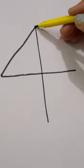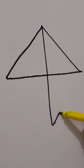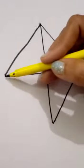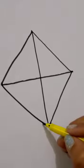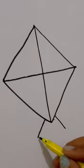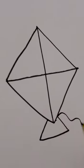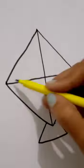Aur ab hum isko yaha se slanting line leke jayenge. Yaha se bhi slanting line leke jayenge. Aur from here also we will draw a slanting line. Now, we will draw a slanting line and we will join it. So, this is another kite.